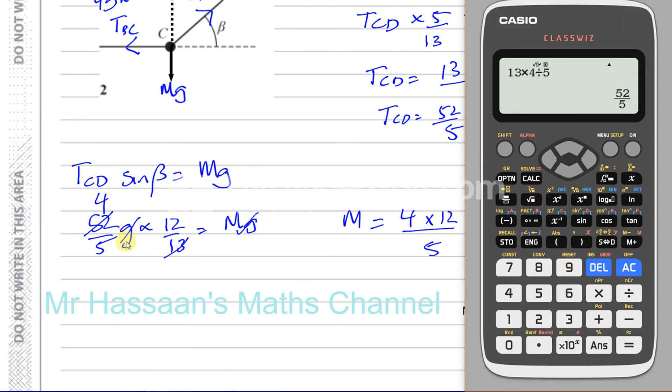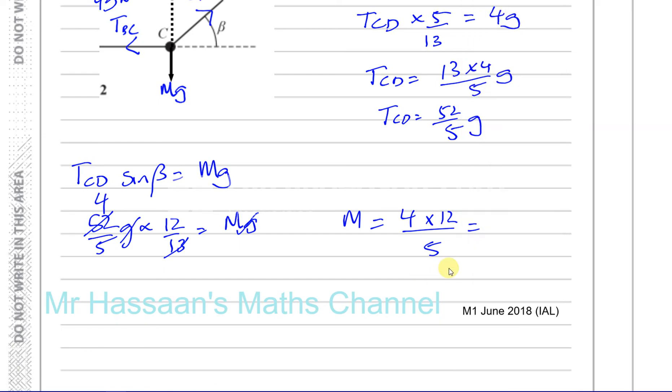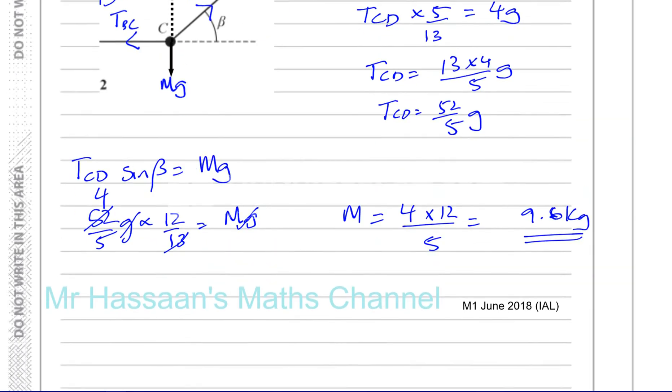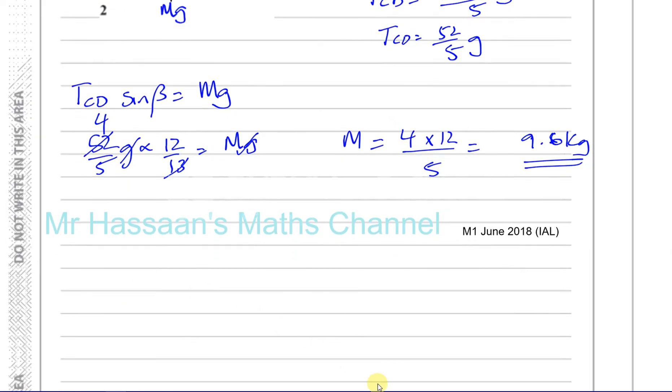Let's just do that. 52 over 5 times 12 over 13. And that gives you 48 over 5, which is 9.6. 9.6. And this is in kilograms. 9.6 kilograms. And that's the answer for M. And there we have the answer to this question.